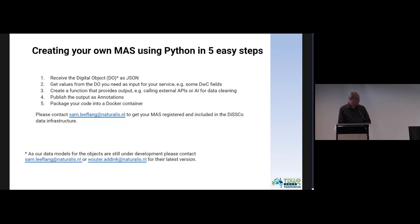The first step is to receive the object as a creation object and get the values you need as input for your service. Second, create your own function that provides the output — for instance, you can call external APIs or use AI for data cleaning. Third, publish the results of your custom function as annotations. Finally, package your code into a Docker container so that it can run within the infrastructure.